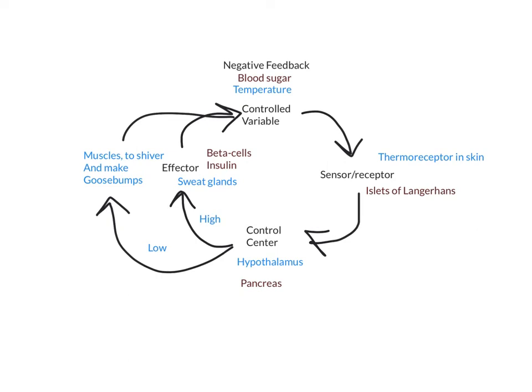Now, what if you haven't eaten in a while? If you haven't eaten in a while, your blood sugar might be a little bit low. If it's a little bit low, you actually have alpha cells, and they release a chemical called glucagon. Glucagon is an interesting hormone because what it does is tell the liver to release a little bit of sugar. It's stored in your liver in the form of glycogen, which is just a big, long string of sugars. The glucagon essentially says, 'Hey liver, we need a little bit of sugar right now,' and it will release just enough to get you back to where you need to be.